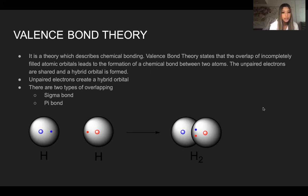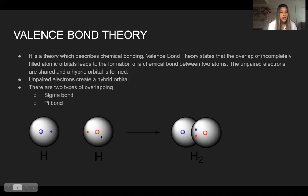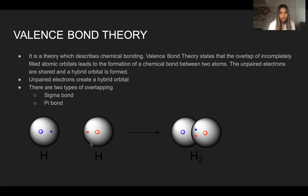Unpaired electrons create a hybrid orbital, and we will learn that there are two types of overlapping called a sigma bond and a pi bond. In this picture, we have two hydrogen atoms that each have orbitals, and we will see that they come to overlap and make a hybrid orbital in the middle.